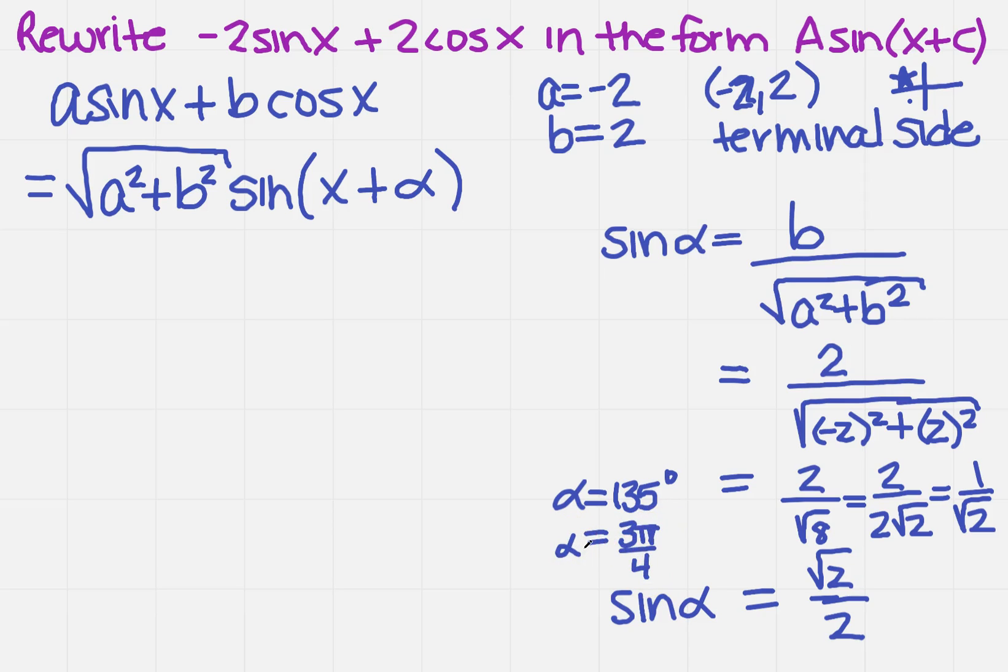Well, now that I know alpha, I can solve the equation that I started with. So this is going to equal √((-2)² + 2²). Then I want to take the sine of x plus alpha. Now alpha is what we just found, so that's 3π/4.